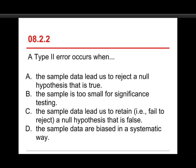Number 2. A type 2 error occurs when, A, the sample data leads to reject a null hypothesis that is true, B, the sample is too small for significance testing, C, the sample data leads to retain that has failed to reject a null hypothesis that is false, or D, the sample data are biased in a systematic way. Well, a type 2 error, we did type 1 a moment ago, but right now a type 2 error occurs when the sample data leads to retain that has failed to reject a null hypothesis that is false.